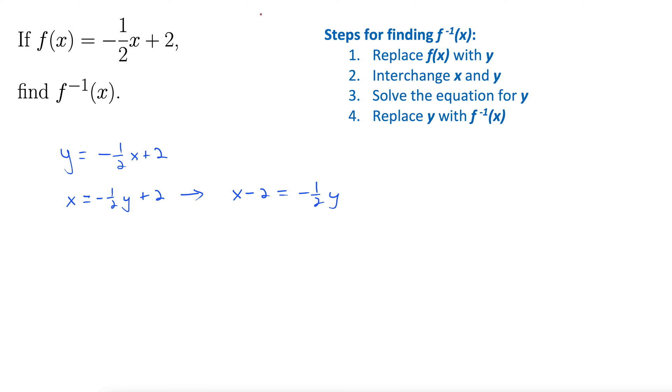Next, I'm going to multiply both sides by negative 2. All right, negative 2. That is going to get rid of the 2 in the denominator and the negative as well. So we have negative 2x minus 2. All of that equals y. I'm going to rewrite this as y equals negative 2x plus 4.